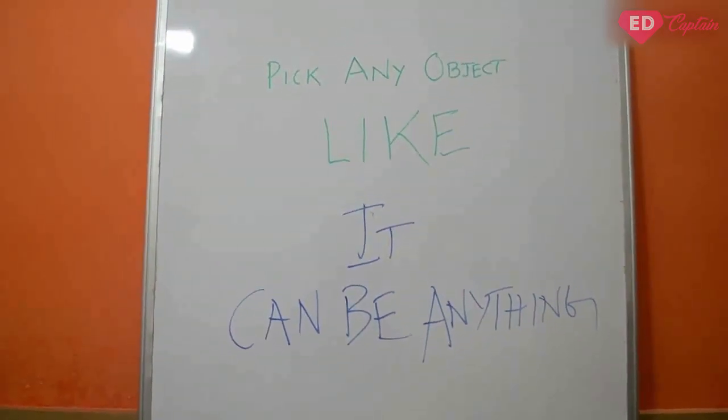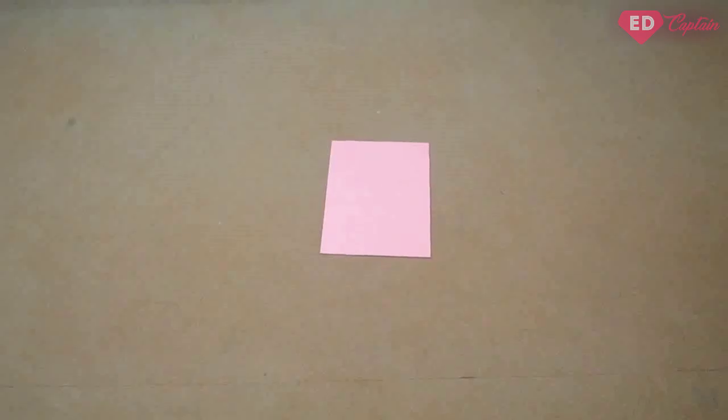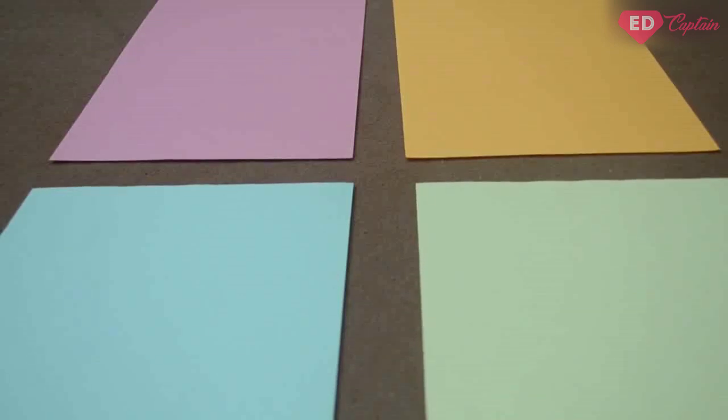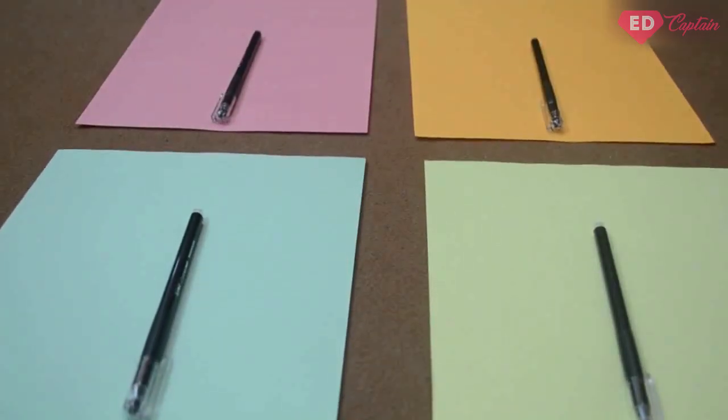Assign one object to each player. Then we distribute the A4 sheets to each of the players and provide them a pen to write on the A4 sheet. Now what are they going to write?